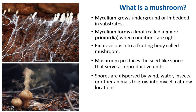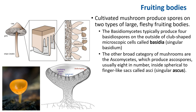The fruiting body produces seed-like spores that serve as a reproductive unit. A typical mushroom produces millions of spores that are dispersed by wind, water, insects, or other animals, and these grow into mycelium in a new location. This is a picture of a puffball releasing spores.